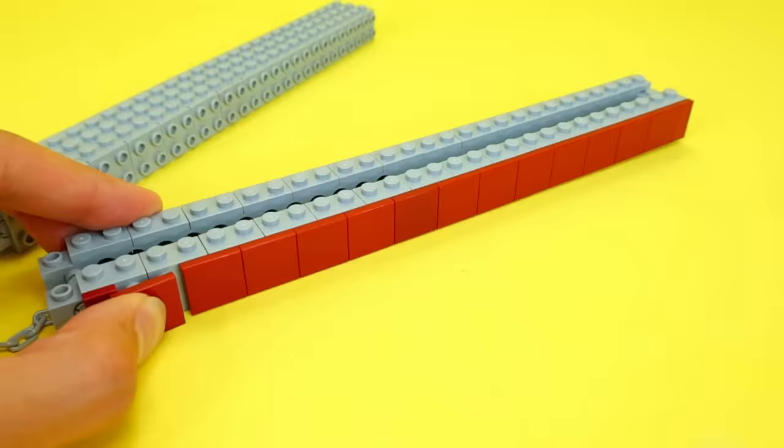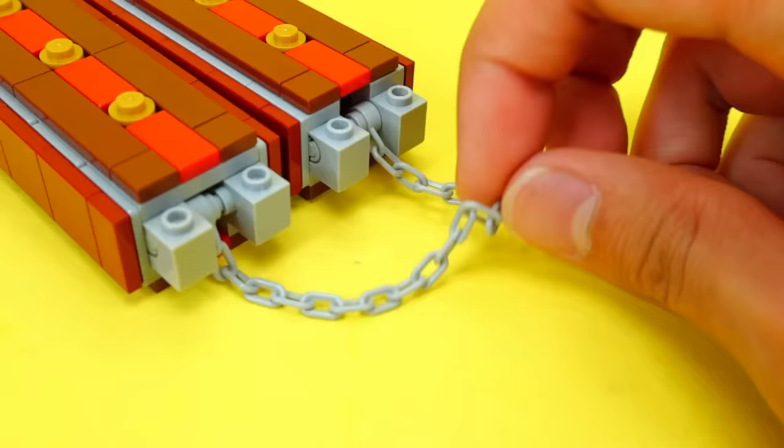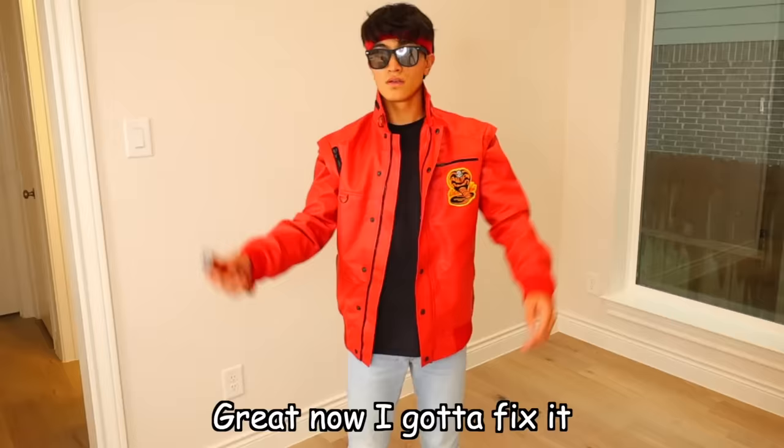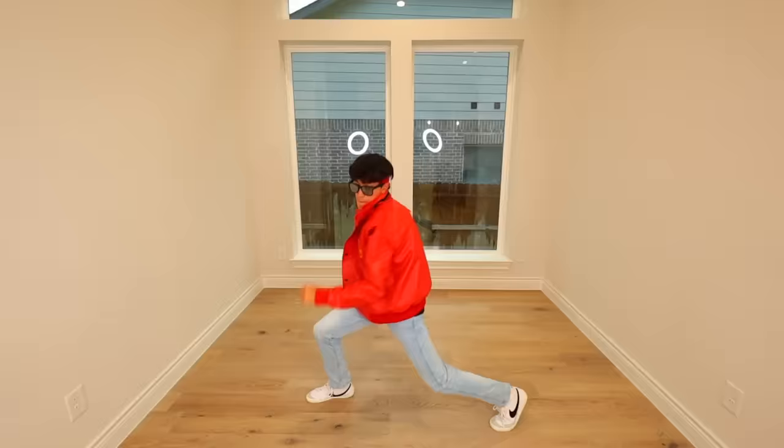Another Asian weapon are nunchucks. To make this, I'm gonna build two long handles and connect it together with this Lego chain. And this actually feels and looks like a real nunchuck. Great, now I gotta fix it. There's a lot of different tricks we can do, like up and down, behind the back, and other crazy combos. Cobra Kai never dies.